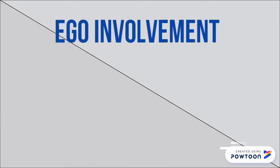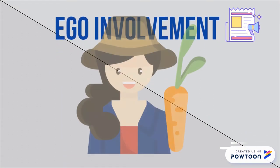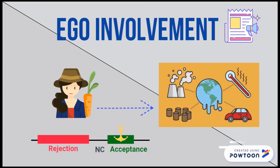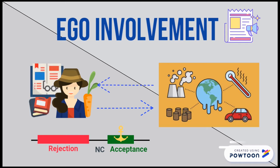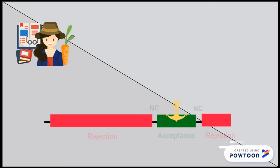Next, let's look at ego involvement, which is a very important factor when conveying a persuasive message. When people pay more attention to an issue, or the issue is important to them, ego involvement will be higher. A deeper understanding of the issue also leads to clearer views and attitudes, and a broader latitude of rejection. As a result, people with higher ego involvement are more difficult to convince.